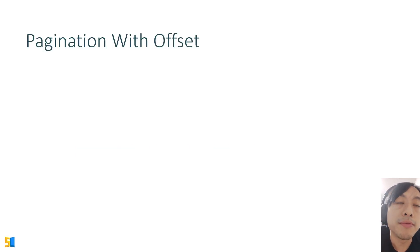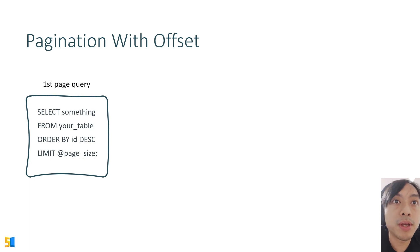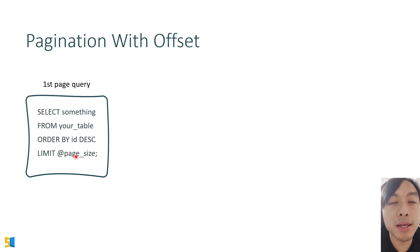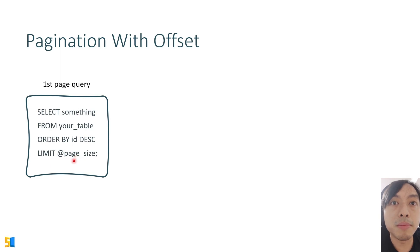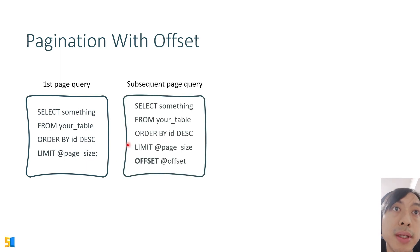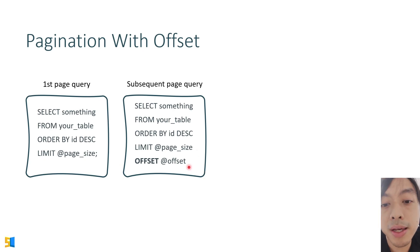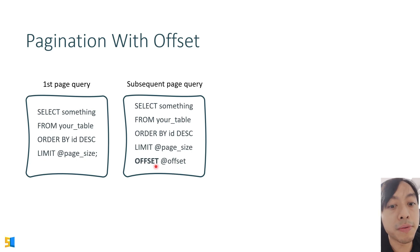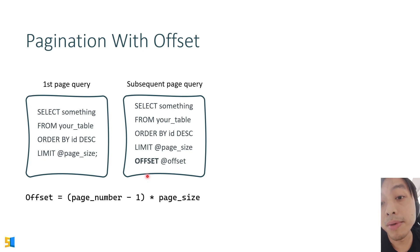The first part is pagination in Spanner. The first method is by using offset. The first query is: SELECT something FROM some_table ORDER BY ID DESCENDING, so we can get the latest data, and then LIMIT by whatever the limit is for one page. That's the first page query. The next query is similar but with an added OFFSET keyword at the end.